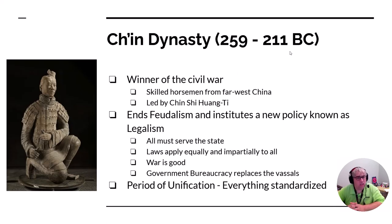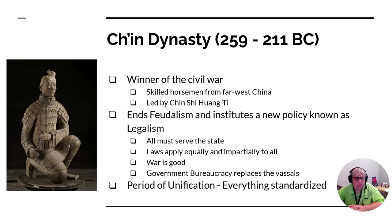That's where we get the Qin dynasty from. The Qin, led by a man named Qin Shi Huangdi, is the winner of that civil war. They are from the most far western part of China, used horses in their fighting, and are distantly related to the Mongols and the Huns. Qin Shi Huangdi ended the idea of feudalism — he gave no land away and instead started a policy called legalism.